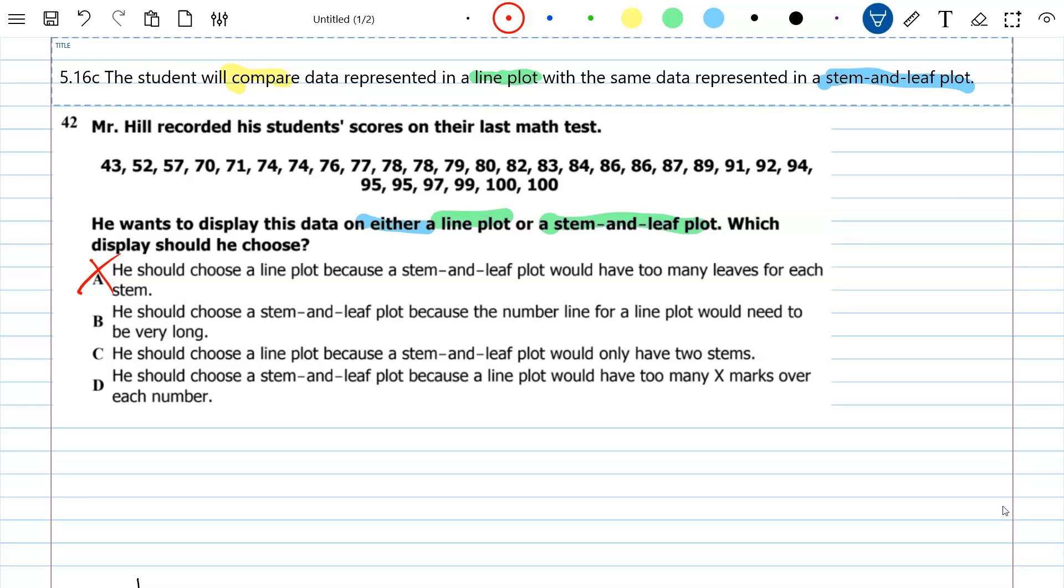So B. He should choose a stem and leaf plot because the number line for a line plot would need to be very long. Now, I've actually gone ahead and drawn each one of these, and I've done them like three different ways. And that actually ends up being the correct answer. And I'll show you in a minute why. But let's go ahead and look at C and D first.